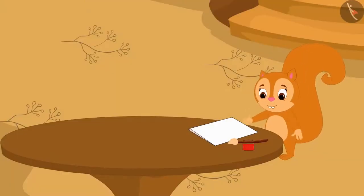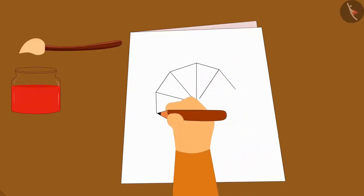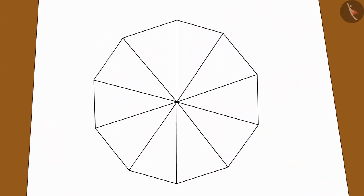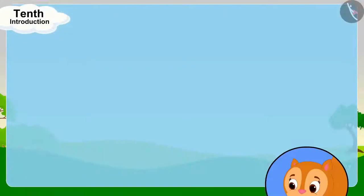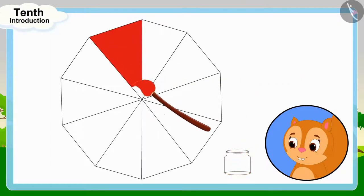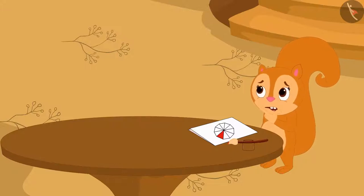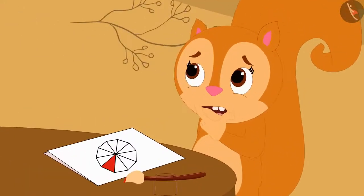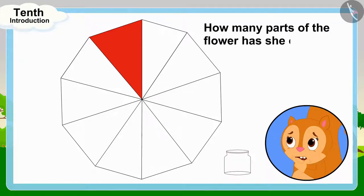Chanda is making a greeting card for Babban. She has drawn a flower on paper using 10 similar triangles. She started coloring the petals of the flower with red color. Oh no, I have only painted one petal so far and the color is over, Chanda thought nervously. Now Chanda is thinking, how many parts of the flower has she colored?